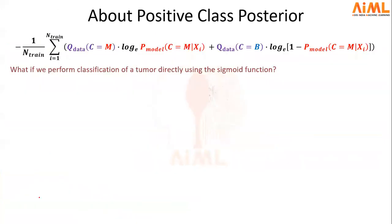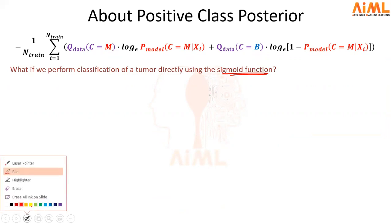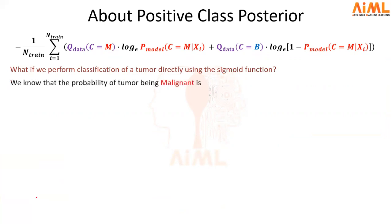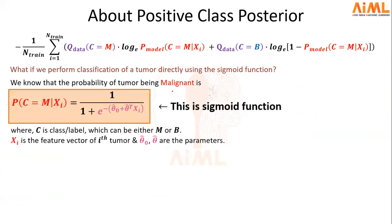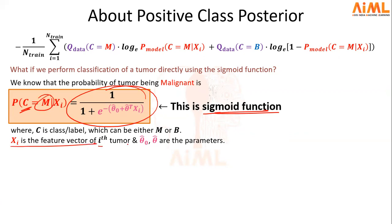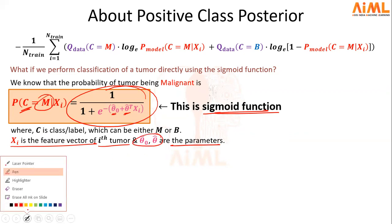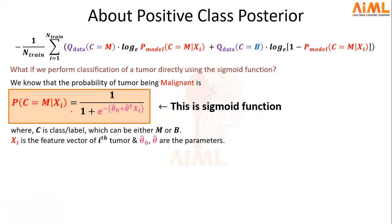Now, if we want to perform the classification of a single tumor using the sigmoid function, for that we already know there is a probability of a tumor being malignant, which we defined at the starting of this video. That probability is actually given by this expression, and this expression is actually our sigmoid function. In this expression, C is your class-level variable, M is the category for which we want to compute the probability — that is, malignant. X_i is our feature vector of the tumor, and theta-hat-zero and theta-hat are actually the parameters of the sigmoid function. In order to compute the probability of a tumor being malignant, we have to know the values of these parameters.